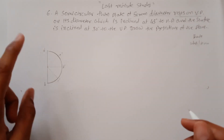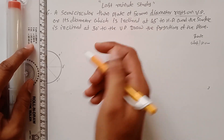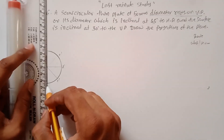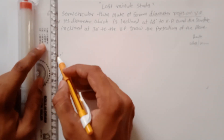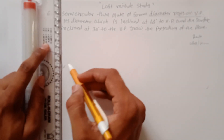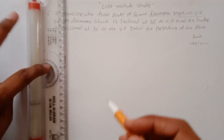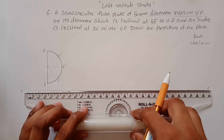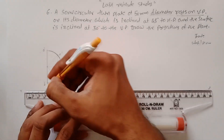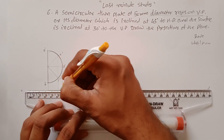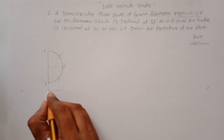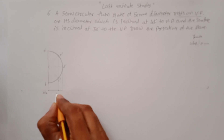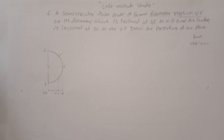Now draw the top view by projecting from each point of the plane. Since there are no sharp corners, the divided points are projected down. The top view appears as a straight line, with points labeled: A, B at one end, C and E in the middle, and D at the other end.